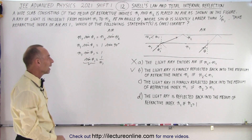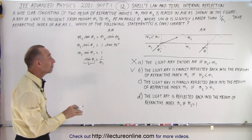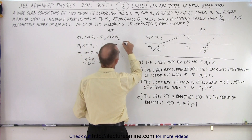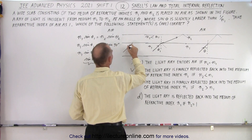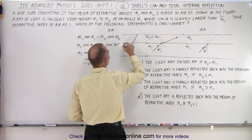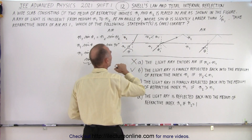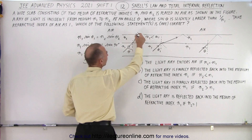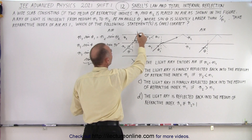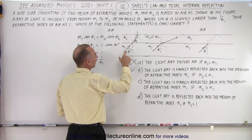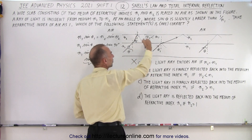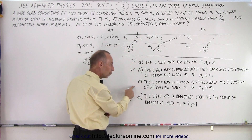Statement C says the light ray is finally reflected back into the medium of refractive index N1 if N2 is greater than N1. If N2 is greater, the light bends towards the normal entering N2, so the angle becomes smaller. However, the refractive index N2 is larger, so the product N2 sine(θ) is still large enough that total internal reflection still occurs at the N2-air boundary. Statement C is correct.